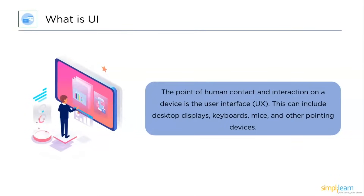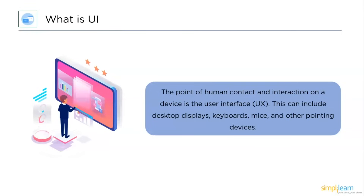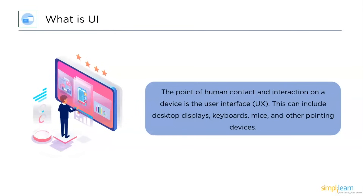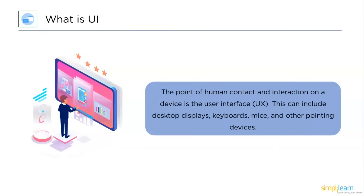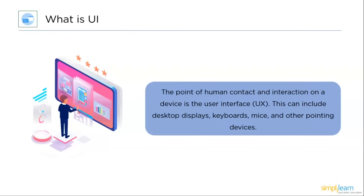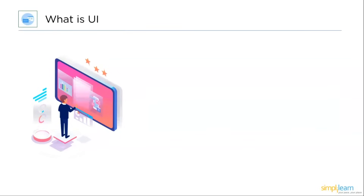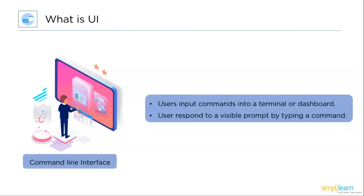User interface, or UI, is the point of human contact and interaction on a device. This can include desktop displays, keyboards, mice, and other pointing devices. It also refers to the manner in which a user engages with a website or application — in other words, the design of the user interface. There are different types of user interface.